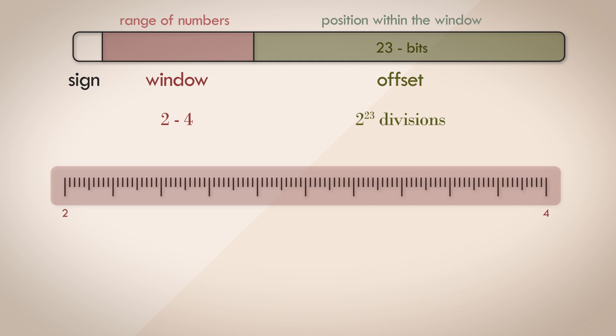The smaller the window, the smaller the intervals, and finer the precision. As the window size becomes larger, each one of these 2 to the power of 23 intervals get larger as well. The precision is more coarse and granular.